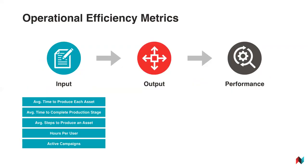Your input metrics should give you insight into the amount of time it takes to complete each individual piece of collateral — the time it takes to complete each production stage, so how long are things spending with legal, how many revisions or amendments are being made, the number of steps you need to go through to produce your collateral, and how many hours your teams are physically spending on each asset. From that, you can start to put a tangible dollar figure not just on each asset but on each individual stage of production, and then you can start to put a dollar figure on how much you're saving by becoming more efficient.